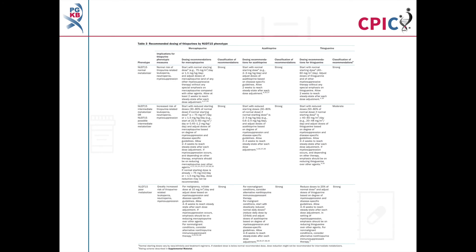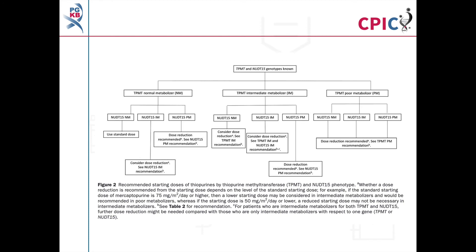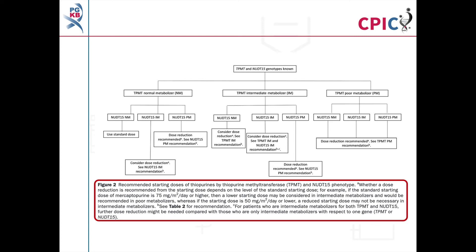The dosing recommendations for mercaptopurine by NUDT15 phenotype, in addition to those for azathioprine and thioguanine, can be found in Table 3 of the guideline. Detailed footnotes pertaining to the recommendations can be found at the bottom of this table. Figure 2 in the guideline shows how to select an appropriate prescribing action if both the TPMT and NUDT15 genotypes of a patient are known. Detailed footnotes are given in the figure legend.